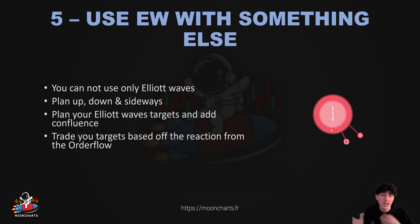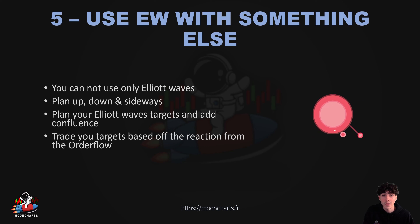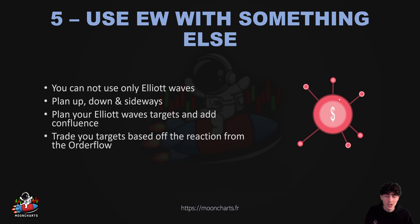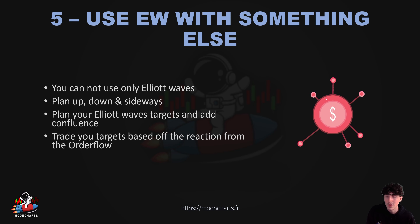So you add the Elliott Wave targets and add the confluence to your chart to see where confluence meets the targets. Once you've done this, you set alerts before the target. When the alarm rings and the target is hit, you check the reaction on the order flow. If the reaction is good, you take the trade. If not, remain patient for better data or wait for the next target. It's complex to master Elliott Wave, but it's absolutely possible if you're out there working and learning.